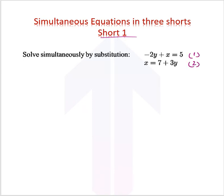From number two, we clearly have x is equal to 7 plus 3y. So we are just going to substitute x from equation 2 in equation 1. So we get minus 2y plus x. In place of x, I will write 7 plus 3y is equal to 5.